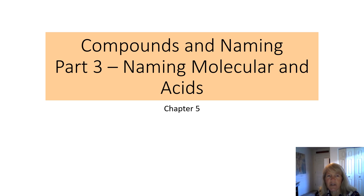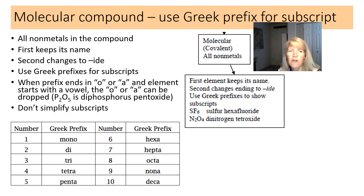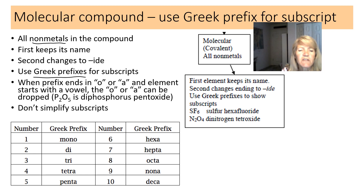This is part three: naming molecular compounds and acids. Molecular compounds are all nonmetals and use a completely different naming scheme. The first element keeps its name, the second changes to -ide, and subscripts are indicated with Greek prefixes.